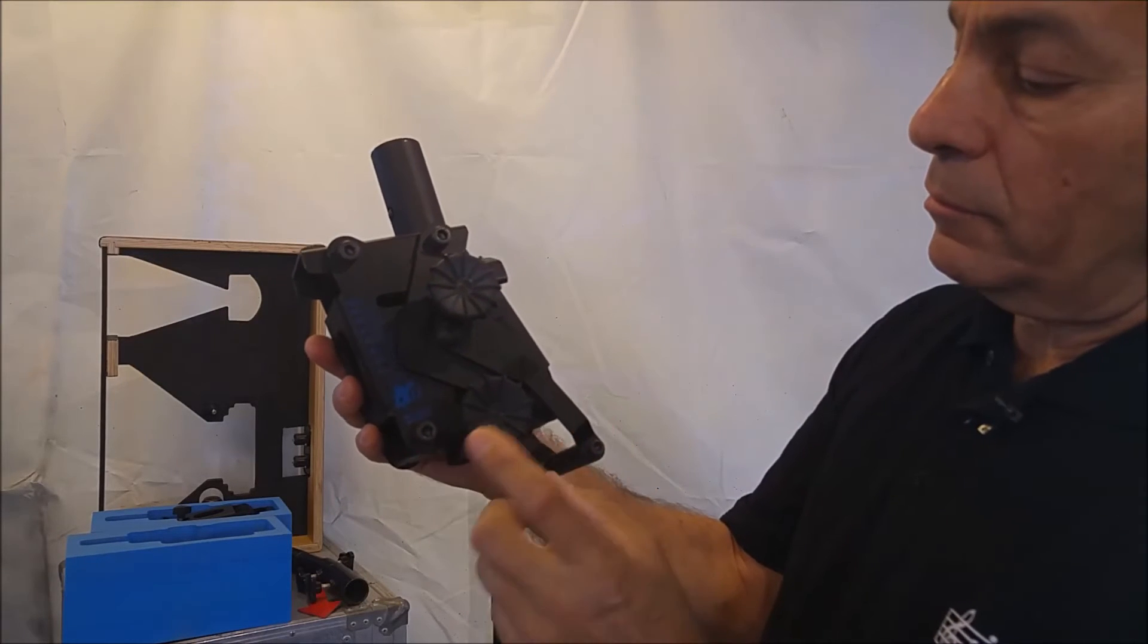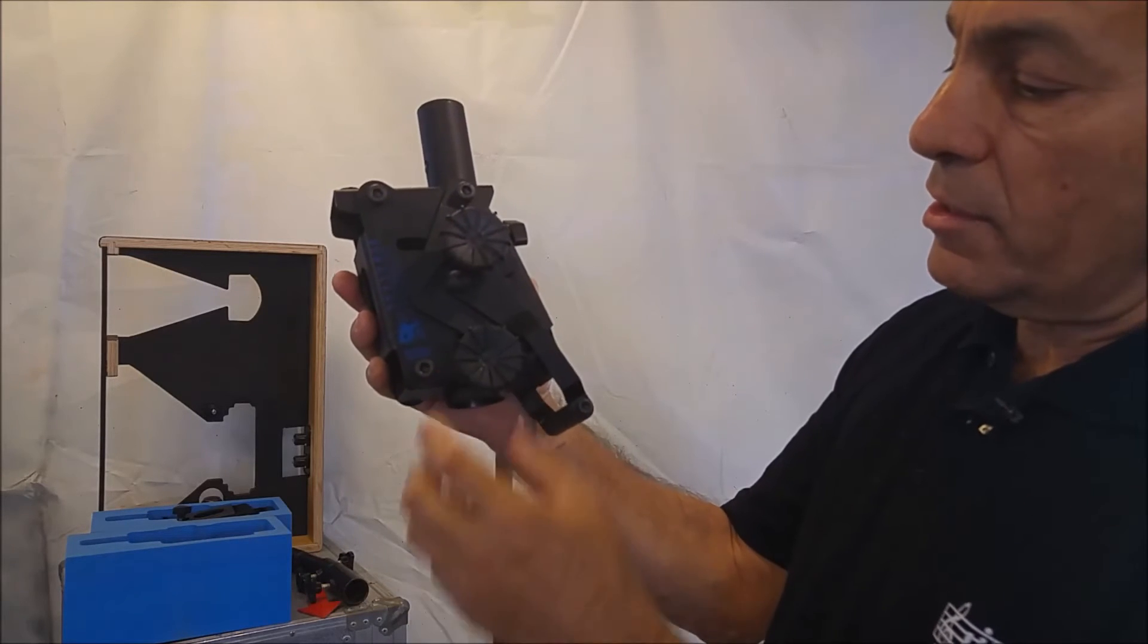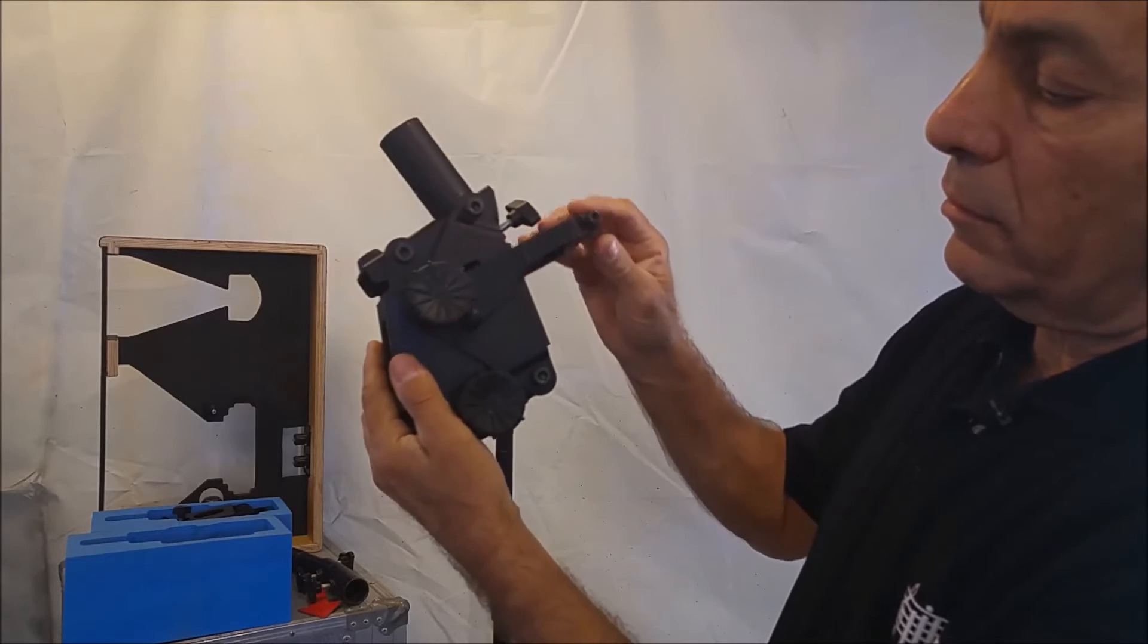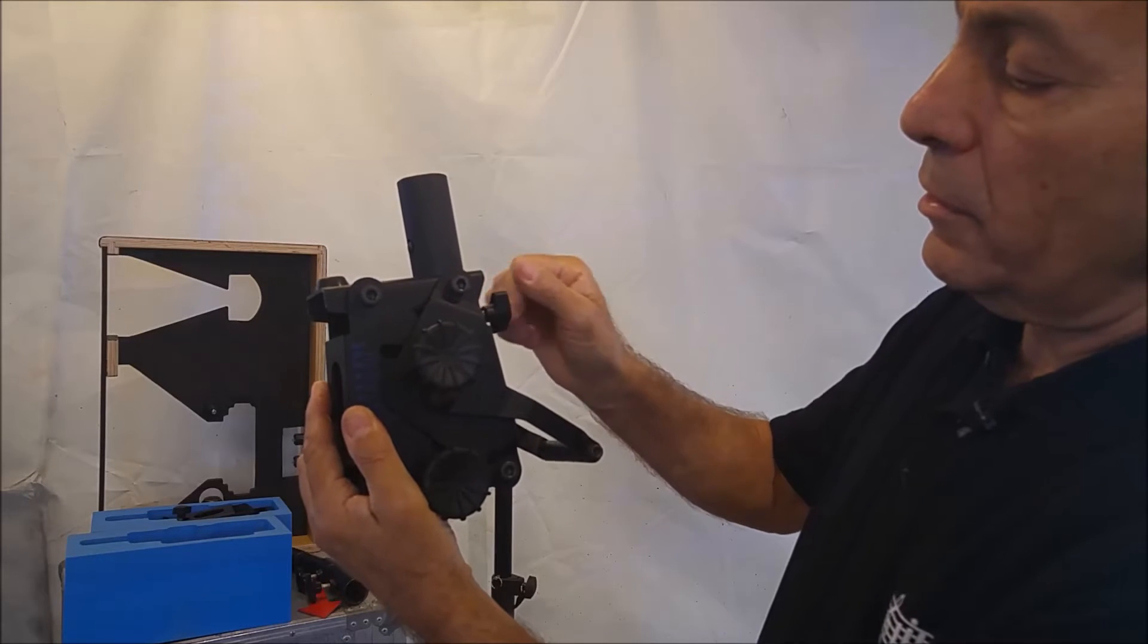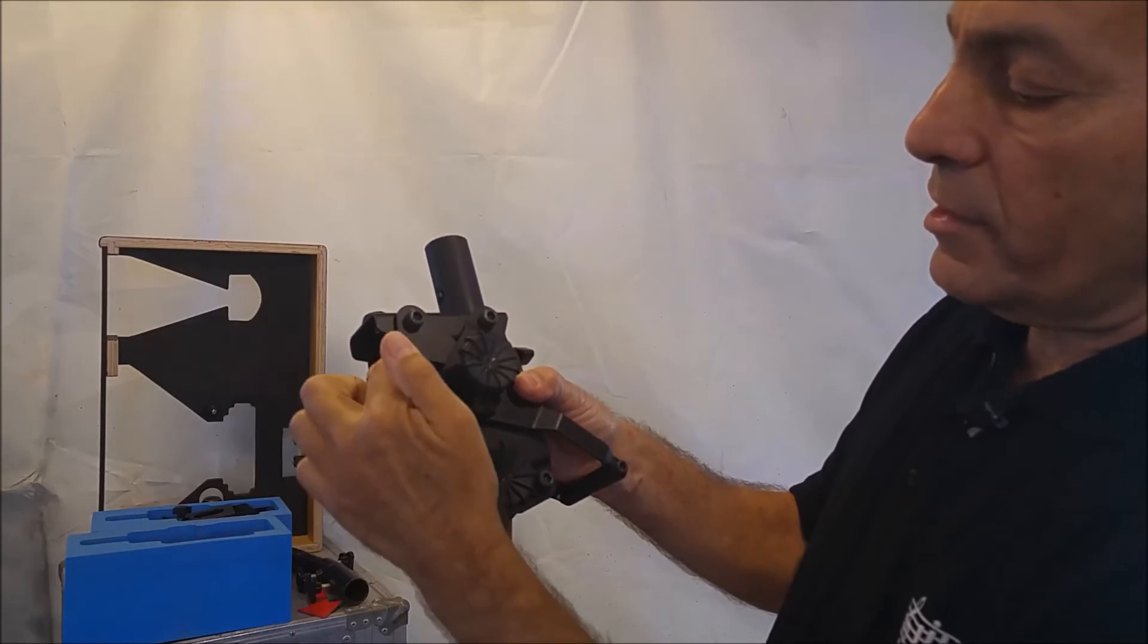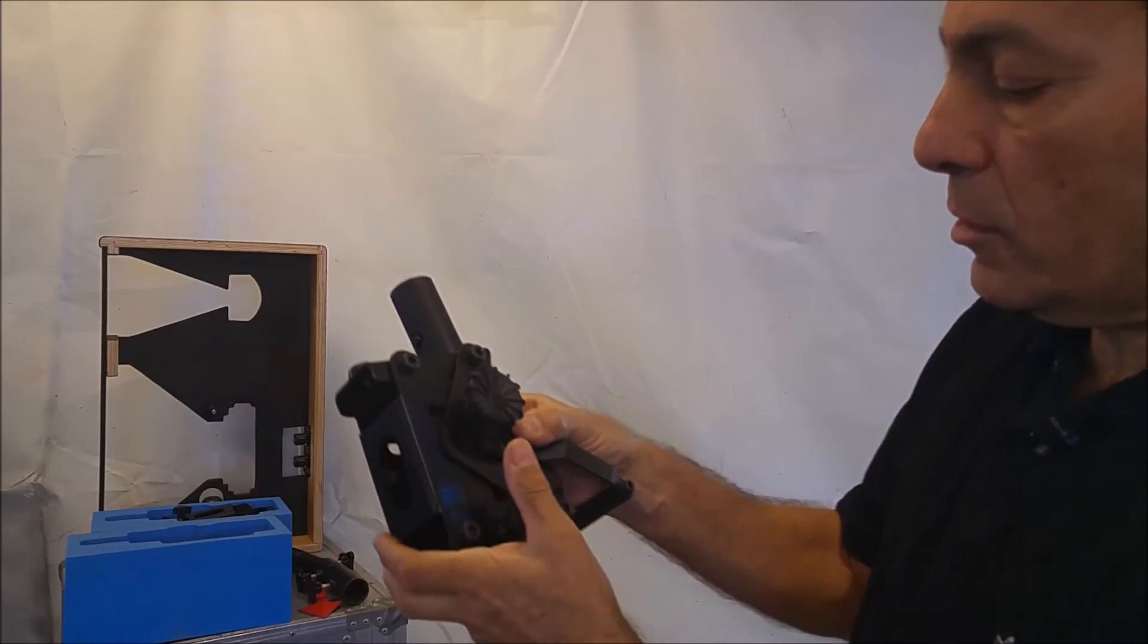It has the locking knob to lock the whole device onto the stand. This is the tilting angle locking knob. And this is the new addition, the cab lock. You have a scale on either side. I'll show you how it works.